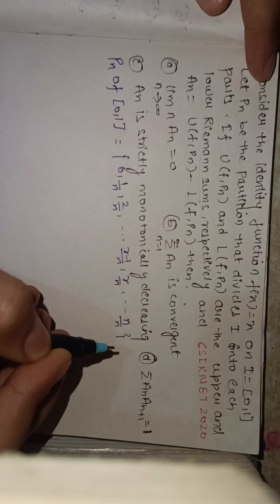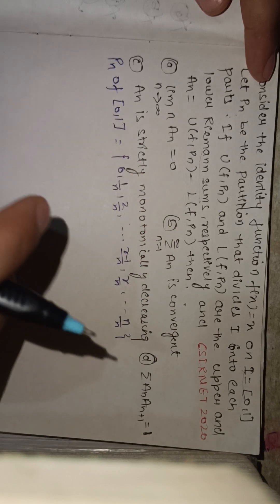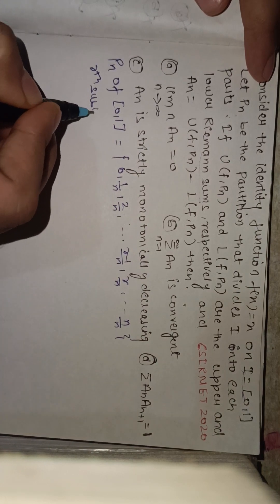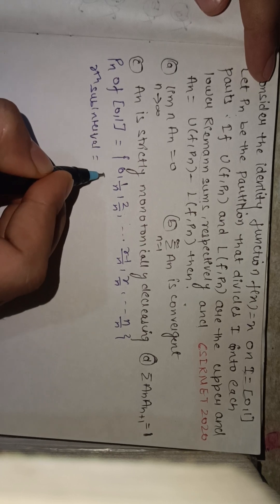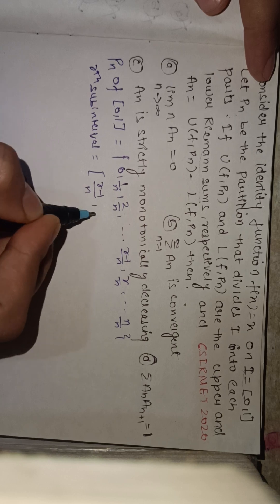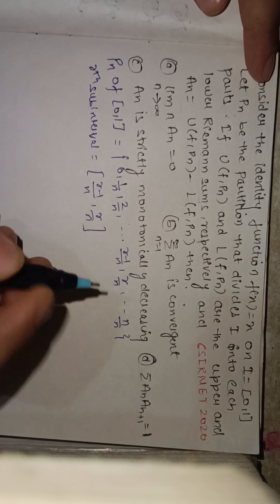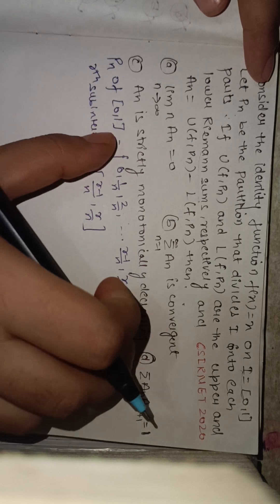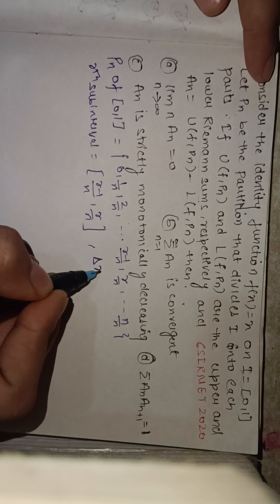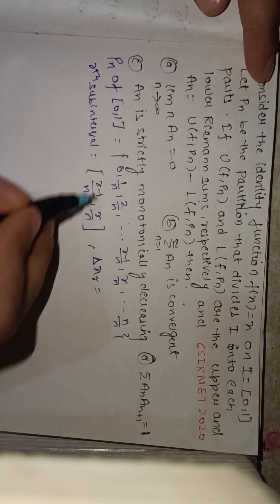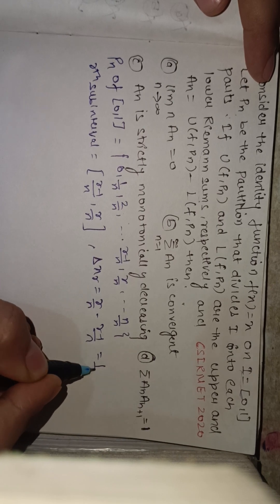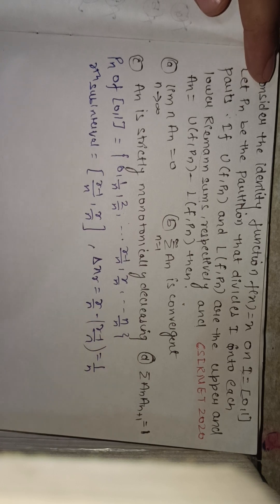The r-th sub-interval of this partition is [(r-1)/n, r/n]. We need to find the norm of this interval — that is, the upper limit minus the lower limit — which is r/n - (r-1)/n = 1/n.